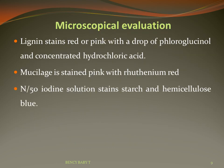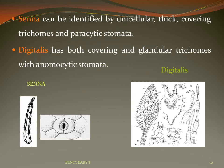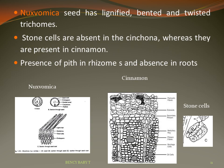Examples of staining reagents in microscopical evaluation: fluoroglucinol and concentrated hydrochloric acid stain lignin red or pink. Ruthenium red stains mucilage pink. Iodine stains starch and hemicellulose blue. Senna can be identified by unicellular thick covering trichomes and paracytic stomata. Digitalis has both covering and glandular trichomes with anomocytic stomata. Nux vomica seed has lignified bundle sheath trichomes. Stone cells are absent in cinchona but present in cinnamon.